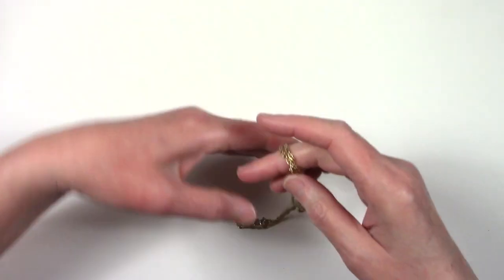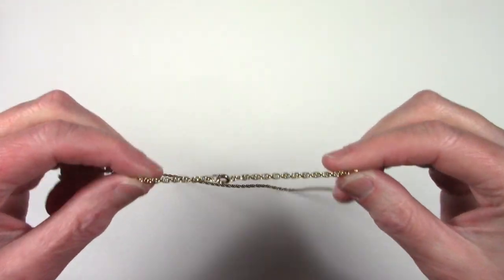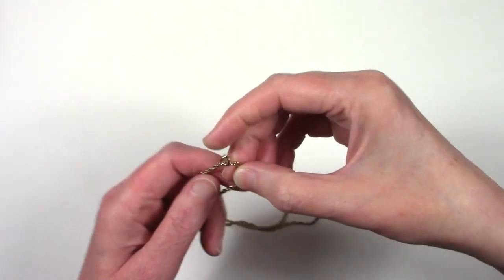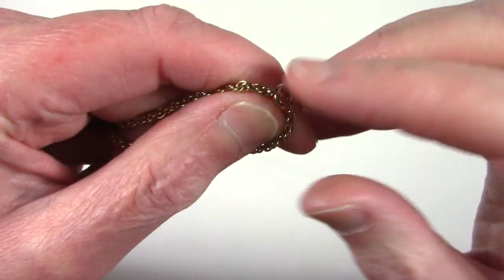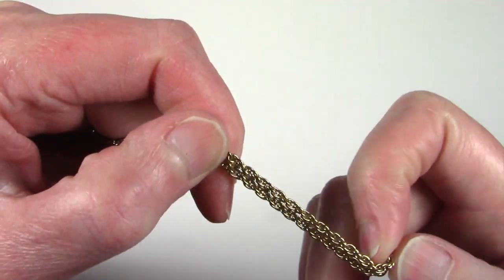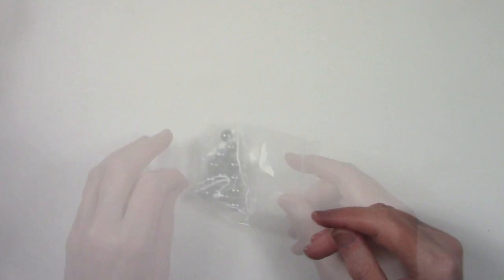So chain necklace. It looks vintage. It has that vintage look to it. There isn't a lot of tarnish on the clasp. It has a C clasp, but it's got that braided chain that you see with a lot of vintage necklaces or bracelets too.